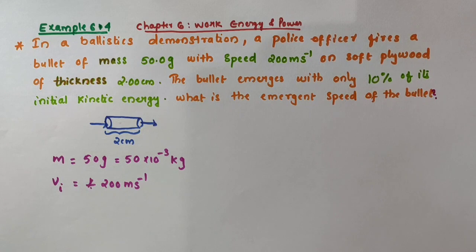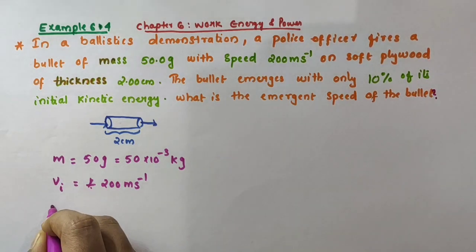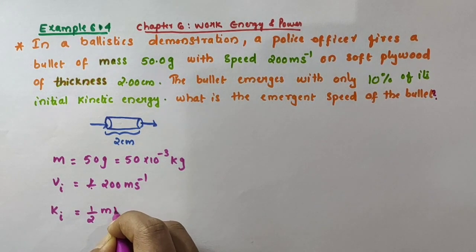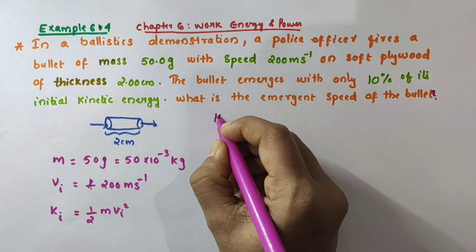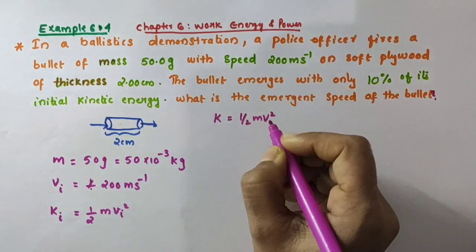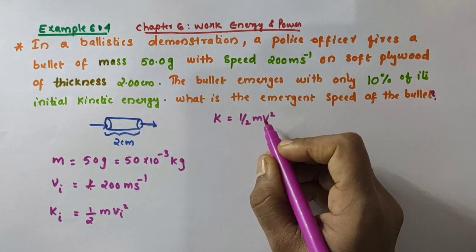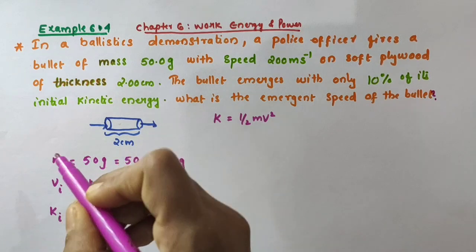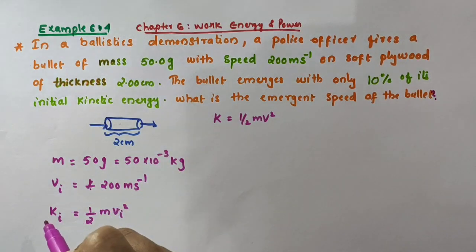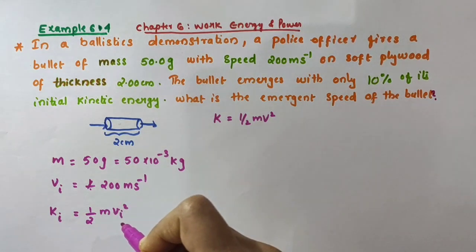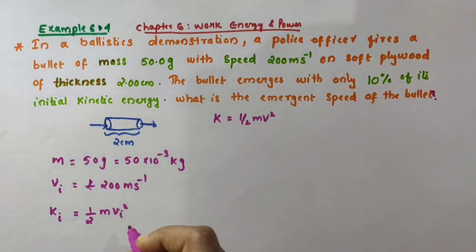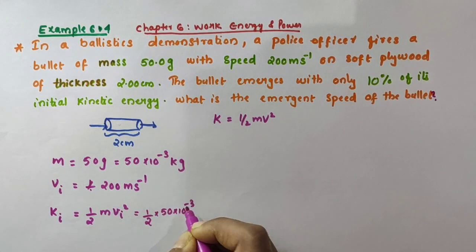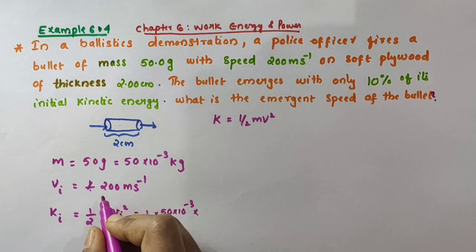Now what about its initial kinetic energy? I am representing it by K_i. Initial kinetic energy is equal to ½ m V_i². Because when we discussed kinetic energy we got the expression as ½ mv² — when an object of mass m moves with velocity v, its kinetic energy equals ½ mv². So here, initial kinetic energy equals ½ × m × V_i² equals ½ × (50 × 10⁻³) × (200)².